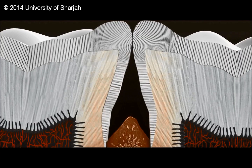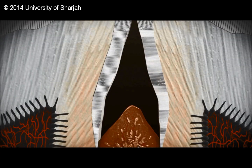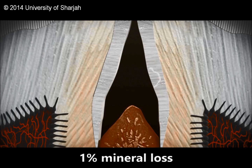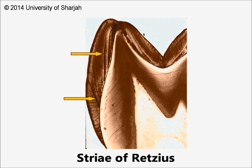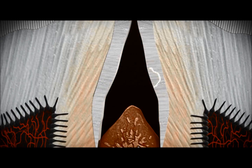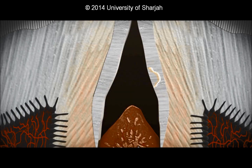The first zone is the translucent zone, which is the earliest and deepest area of demineralization with approximately one percent mineral loss. It results from the formation of submicroscopic spaces or pores located at prism boundaries and other junctional sites such as cross-striations. The subsurface translucent zone enlarges and a dark zone develops in its center.